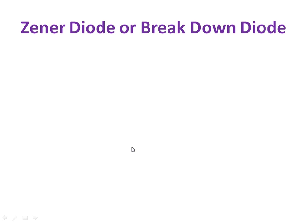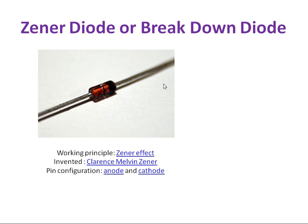Next one is a Zener Diode or breakdown diode. This is a physical representation of a Zener Diode. The working principle is Zener effect, which is invented by Clarence Melvin Zener. It has two terminals, anode and cathode, like a normal PN Junction Diode. So this is the symbol for Zener Diode.